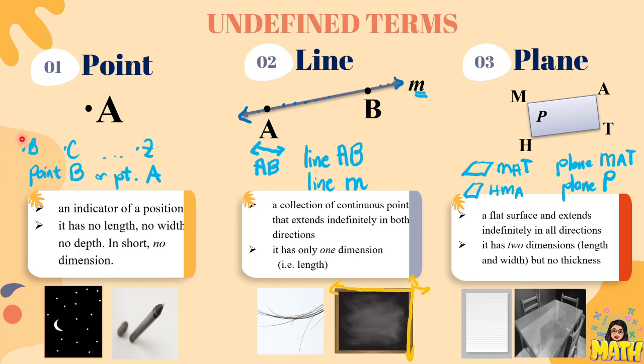So let's make sure na familiar tayo sa different symbols na ginamit natin. For the point, we simply use that symbol. For the line, we use the line symbol above two capital letters. And for the plane, we use this symbol using at least three letters or one capital letter.